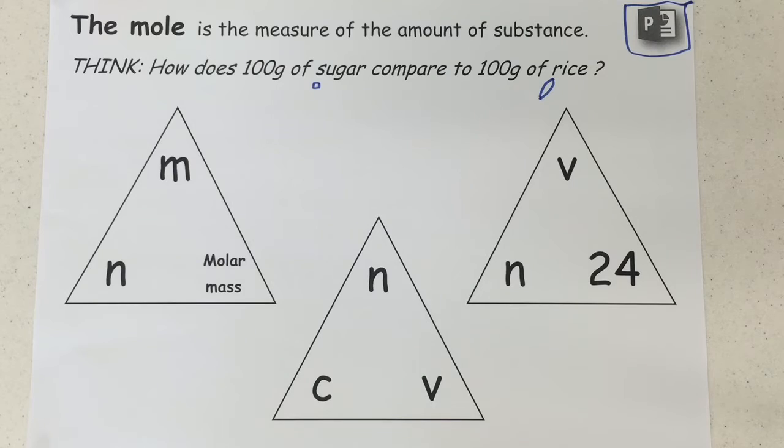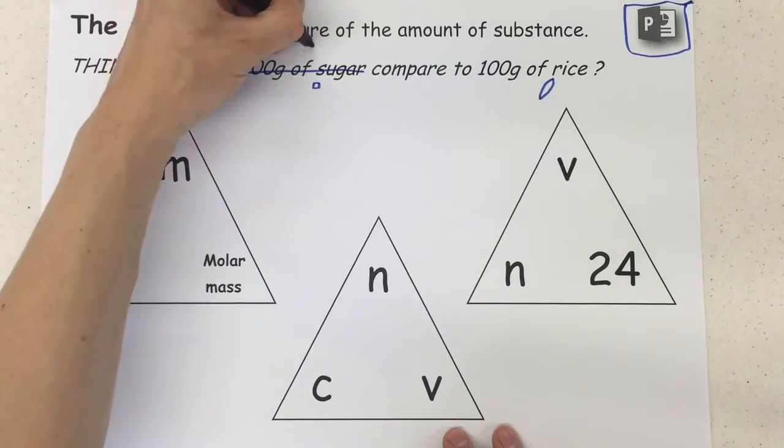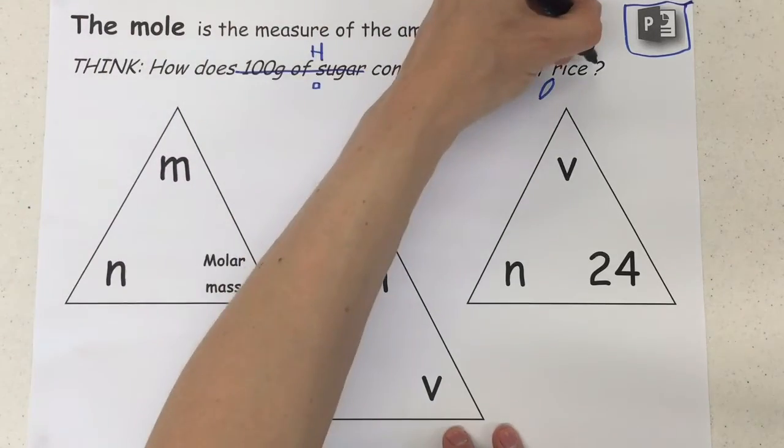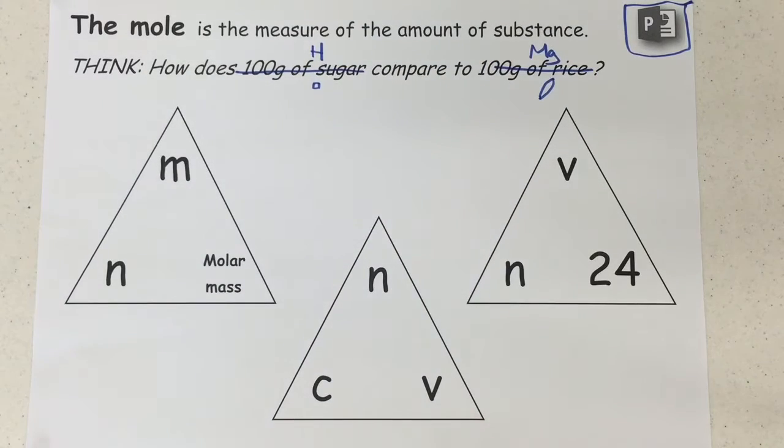We need to know how many we have, count for count. So we could replace the idea of sugar and rice with hydrogen and compare it to magnesium. If we had 100 grams of each of those, just like the sugar and rice, I would expect to have more atoms of hydrogen in my 100 grams compared to atoms of magnesium. The mole is just a quantifiable measure of that.